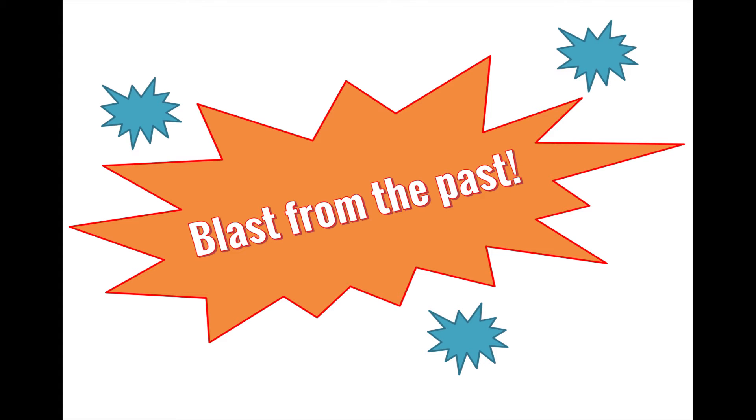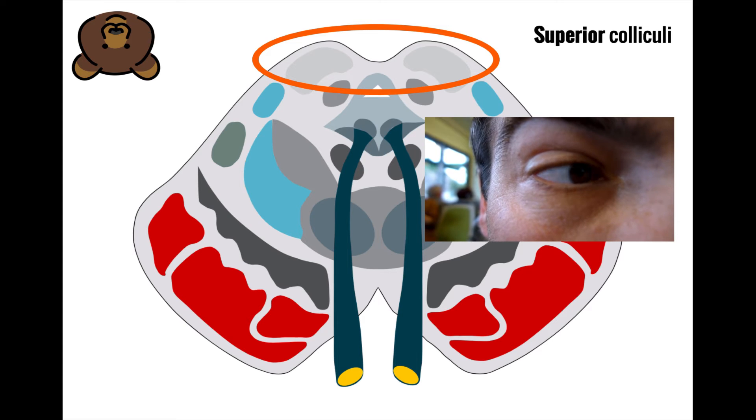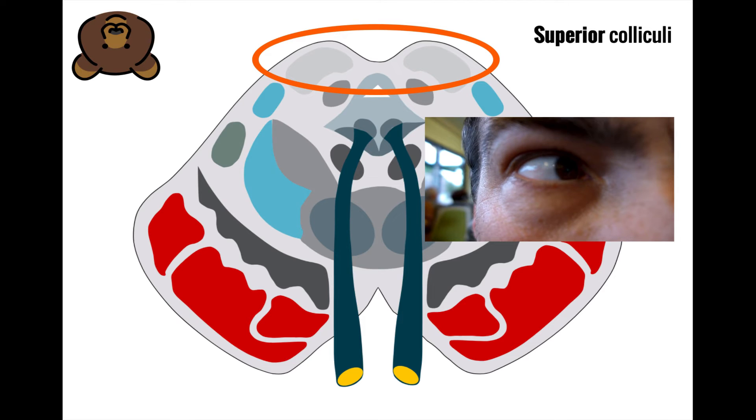Okay, let's do a few blasts from the past featuring some entries from previous videos that each play a role in vision and eye movement. First, what about the superior colliculi, which we talked about in the video on the brainstem? Didn't we learn that these were involved in the visual pathway?